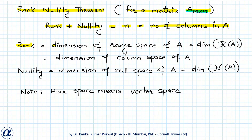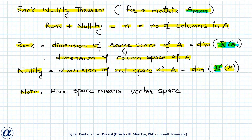Here, rank is the rank of the matrix, and it is also the dimension of the range space of matrix A, written as the dimension of the range space of A. The rank also equals the dimension of the column space of matrix A. Nullity is the dimension of the null space of matrix A, denoted by the calligraphic N of A. Note that by 'space' we mean vector space — so the range space and the column space are the same vector space, and the null space is also a vector space.